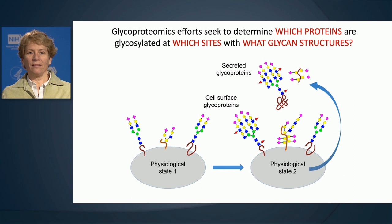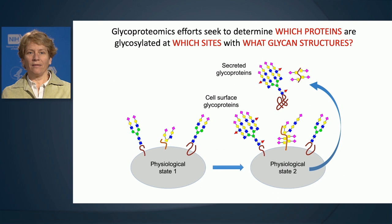But doing just this — determining which proteins are glycosylated at which sites and with what glycan structures — is very difficult to do for the average biologist and even for the average chemist. And it's exactly this information that we're trying to capture with our new tools that combine chemical biology and mass spectrometry.